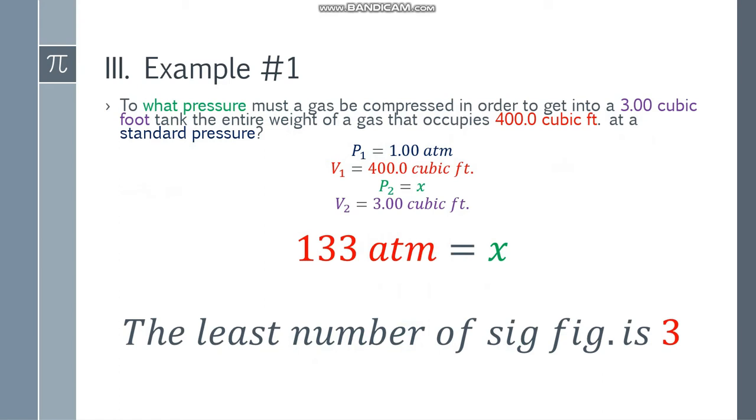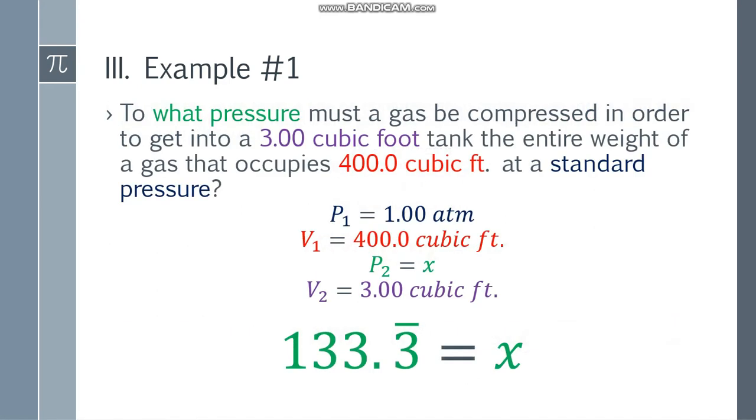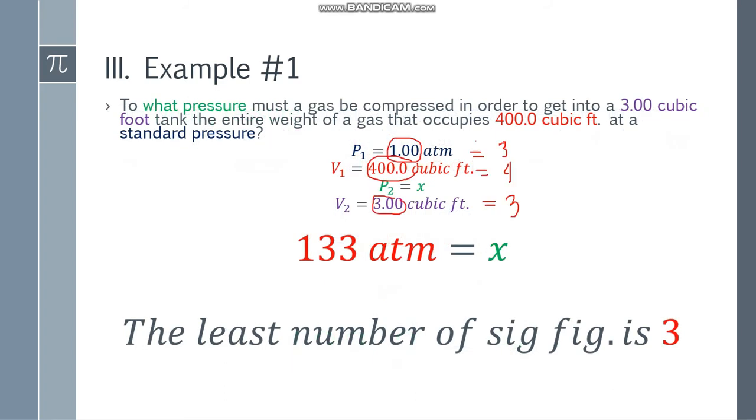Simplify the left side, that will be 400, and the right side will be 3X. Divide both sides by 3, and you will get an answer of 133.3 repeating decimal. The final answer is 133 atm. Why? Because the least number of significant figures is 3. Check: 1.00 has three significant figures, 400.0 has four, and 3.00 has three. So the final answer is 133 atm.